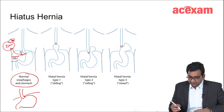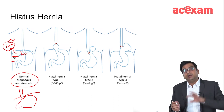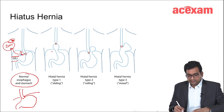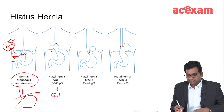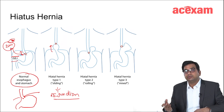Now, whenever there is herniation of the GE junction alone, it is known as sliding hernia. Herniation of the GE junction is sliding hernia type. This is hiatus hernia type 1, which is also known as the sliding hernia.